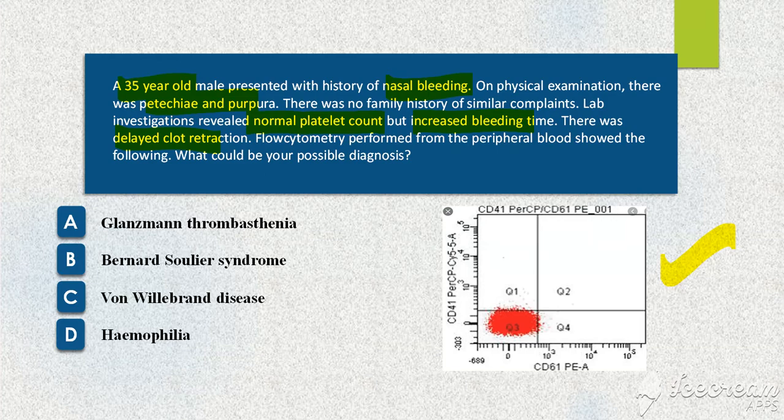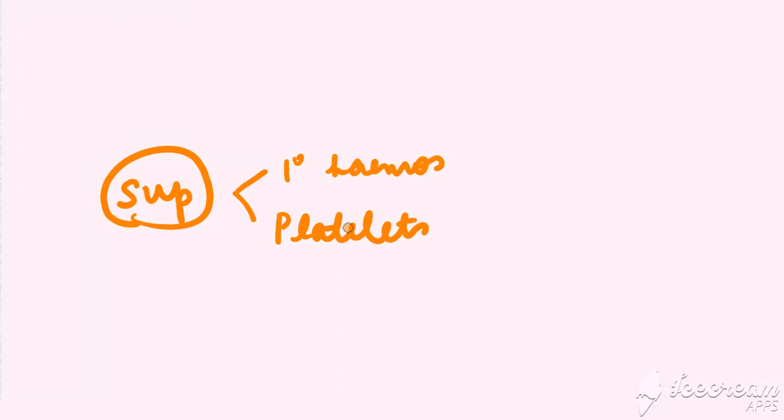What you should remember is when you get any question based on bleeding or coagulation disorder: superficial bleeding, that is bleeding in the skin and mucosa, is seen in disorders of primary hemostasis. When you have any abnormality in the functioning of platelets or the vessel wall, you can have superficial bleeding. So how do you assess whether your platelets are functioning properly or not?